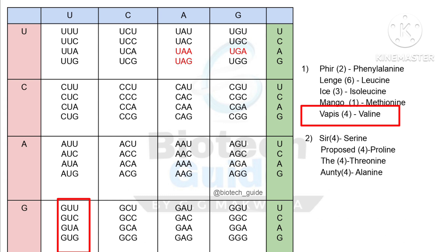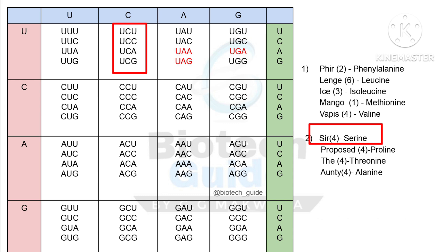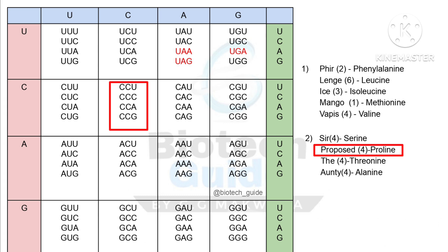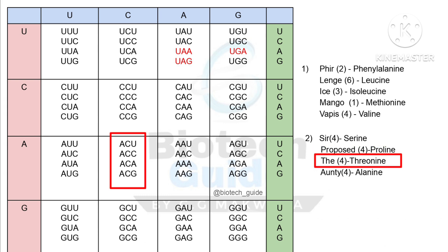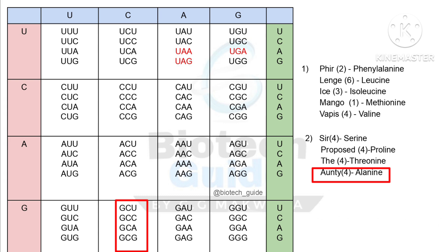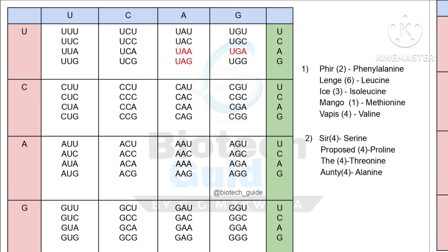For the second column: S stands for serine — the first four codons UCU to UCG code for serine. P stands for proline — CCU to CCG code for proline. T stands for threonine — again four codons code for threonine. A stands for alanine — again four codons code for alanine.